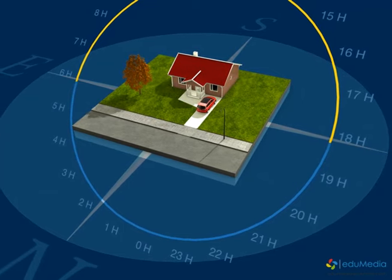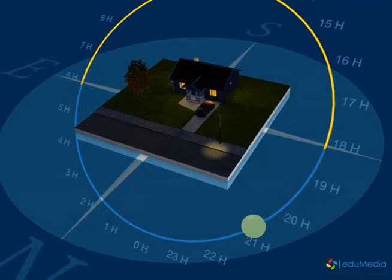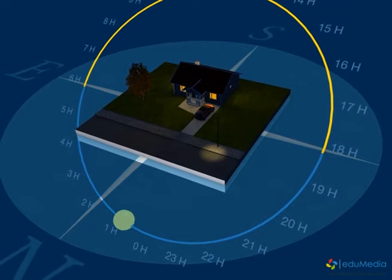Let's place ourselves in the northern hemisphere, midway between the equator and the pole, in for example Montreal or Chicago.